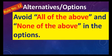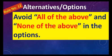Rule number twelve is for lazy test writers: when people are short of options and can only recall one or two good ones, they just put 'all of the above' and 'none of the above.' We should avoid that. That is rule number twelve.